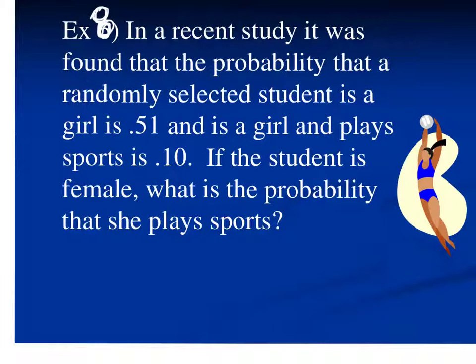Please find example 8 in your notes. In a recent study, it was found that the probability that a randomly selected student is a girl is 0.51, and the probability that a student is a girl and plays sports is 0.10. If the student is female, what is the probability that she plays sports? Since I know the student is female, that is the condition I'm given, so I'm going to use the conditional probability formula.